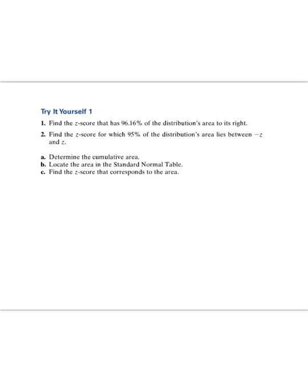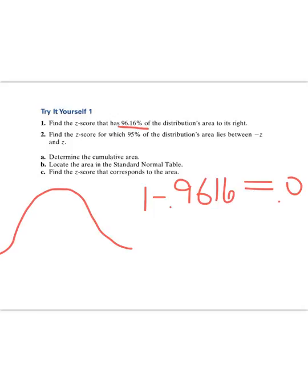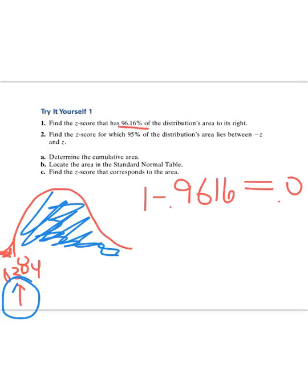Find the z-score that has 96.16% of the distribution's area to the right. We're going to do the same thing. 96.16 to the right, so if I take 1 minus 0.9616, that's going to equal 0.0384. So right here is what I've got to look for, for a z-score. If I find the z-score for that section, then I know 96.16% of the area will be to the right of the z-score that I have for this area.